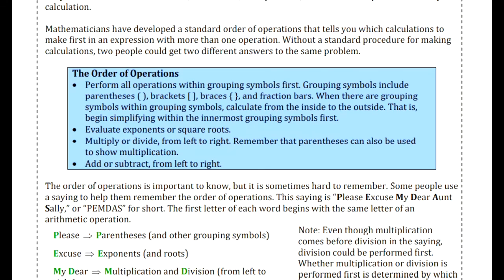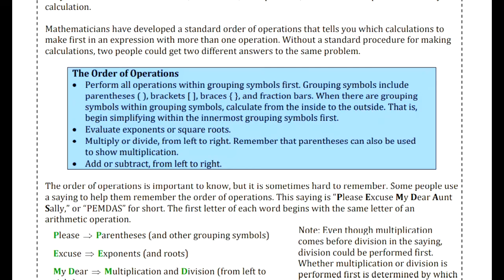That order is here in this blue box in the middle of the page. First, we perform all operations within grouping symbols — so within parentheses, brackets, or braces — working from the inside out if there are multiple sets. After that, we evaluate exponents or square roots. Then we multiply or divide from left to right. Finally, we add or subtract, also from left to right.